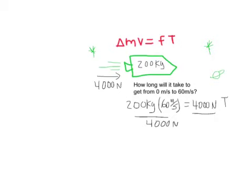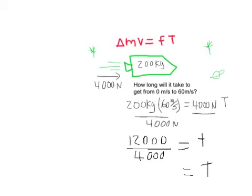So what we're going to do now is we're going to say 200 times 60. That's going to give us 12,000 kilogram meters per second divided by 4000 newtons equals the time. And that means the time in this case equals 3 seconds.